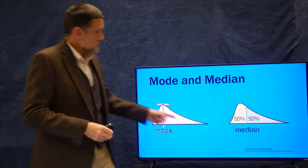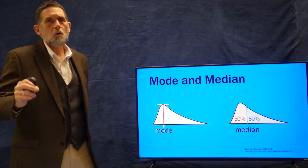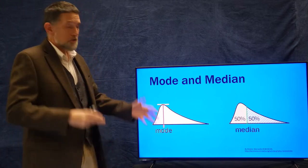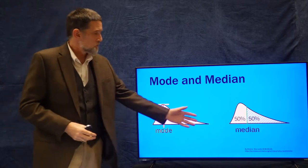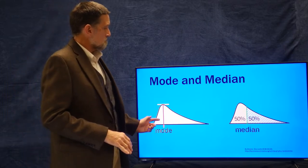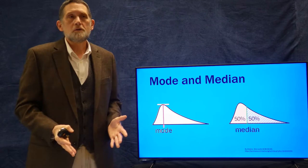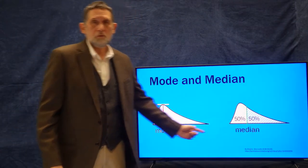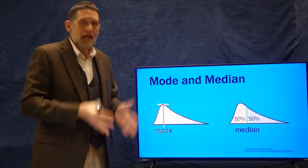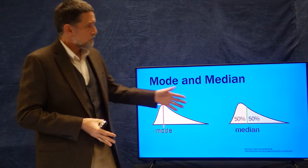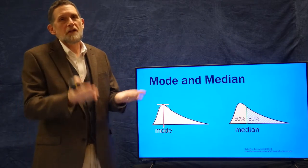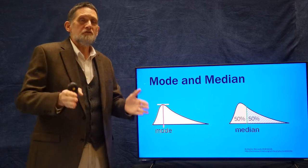When we have a skewed distribution, the mode or median might be better to use. The mode is going to tell you the most frequent case. So if you have a skewed distribution of income, you might want to report the modal score because that's the most frequent score. With the median — that's sort of the middle — that's why you hear the phrase 'median family income.'